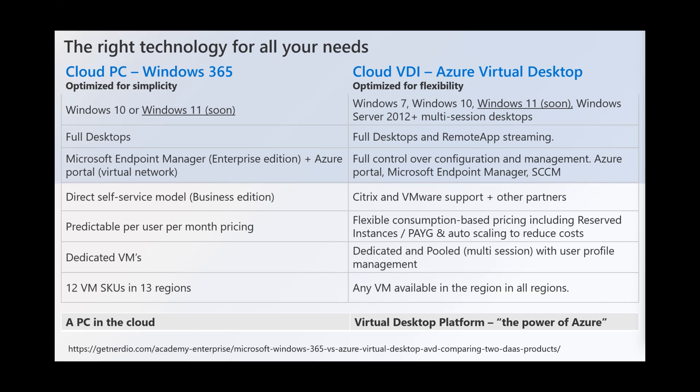Windows 365 pricing is per user per month based on the SKU deployed. AVD is fully consumption-based, supporting reserved instances or pay-as-you-go in conjunction with auto-scaling to power off infrastructure and reduce costs. Cloud PC uses dedicated VMs — a user gets one VM (or multiples), all dedicated and not shared. With AVD you have dedicated personal VMs as well as pooled VMs using multi-session operating systems, allowing multiple users to log on simultaneously to the same VM across a pool.